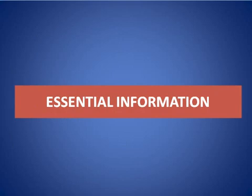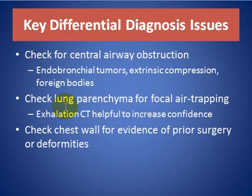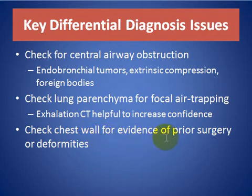Essential information for the diagnosis of unilateral hyperlucent hemithorax: we want to check for central airway obstruction to exclude airway obstruction by endobronchial tumors, extrinsic compressions, and foreign body. We want to check the lung parenchyma for focal air trapping, with expiratory CT helpful to increase confidence. And we check the chest wall for evidence of prior surgery or deformities.